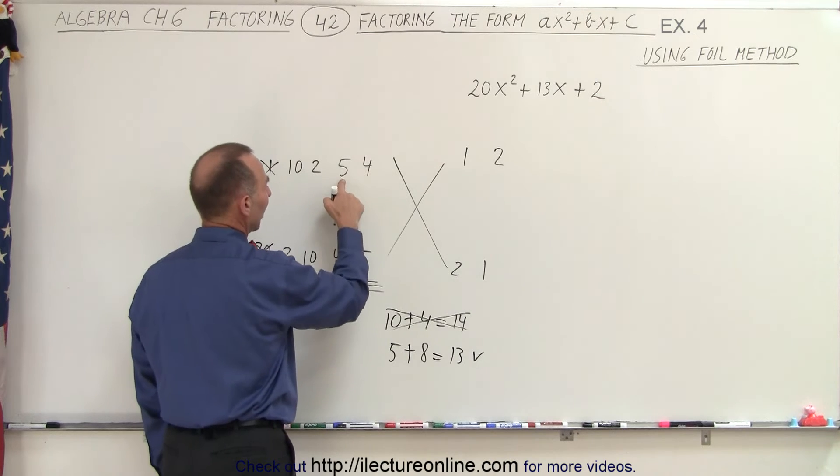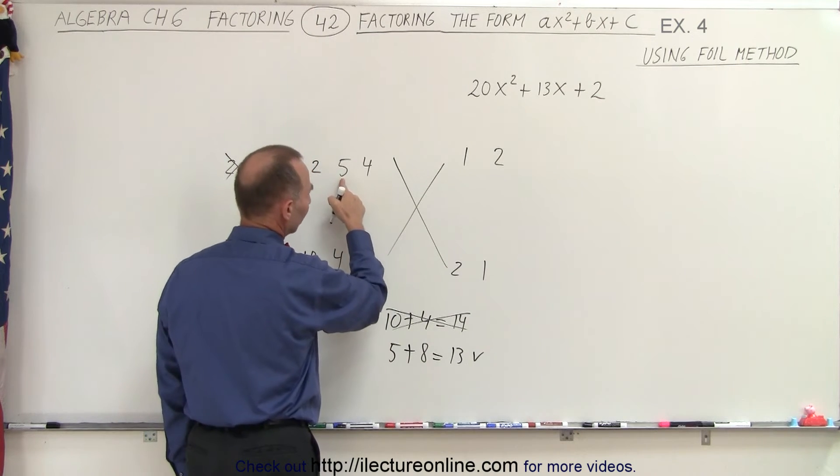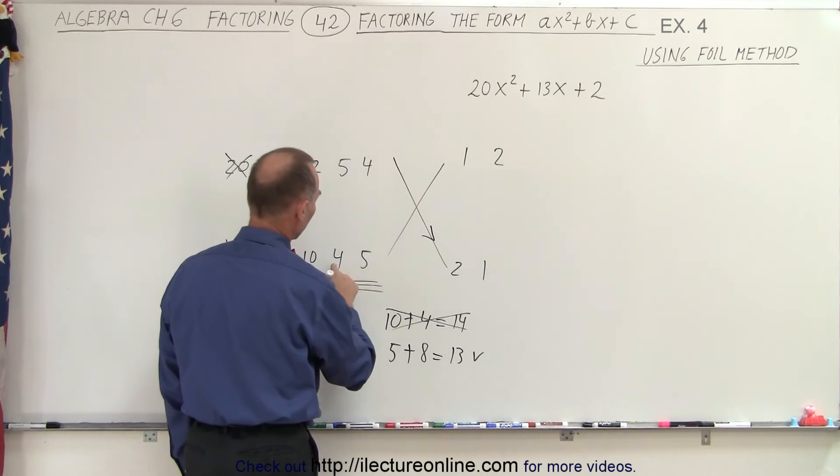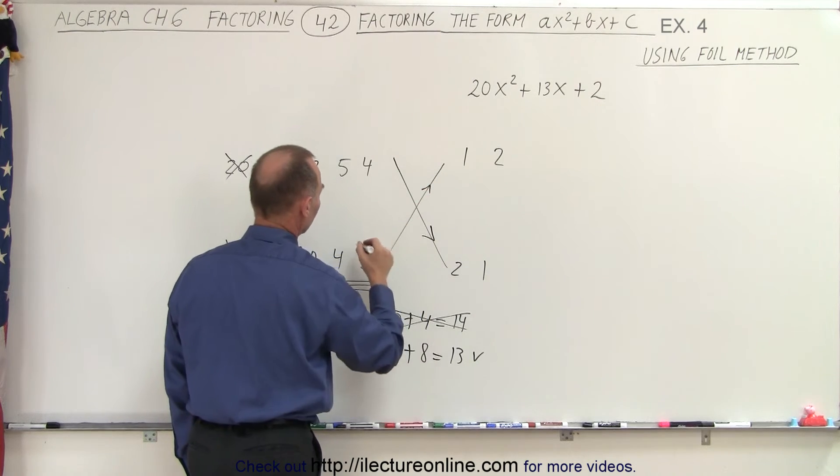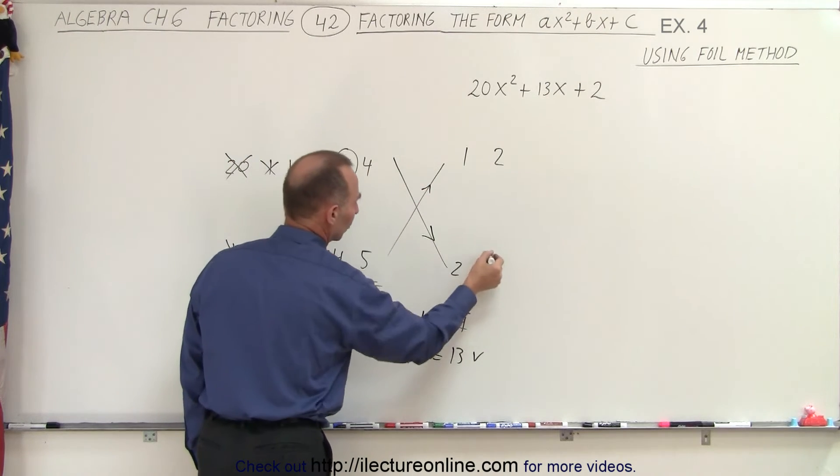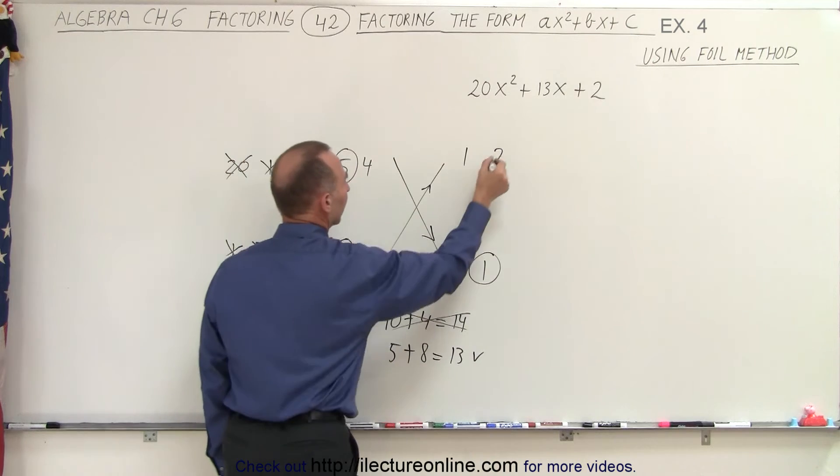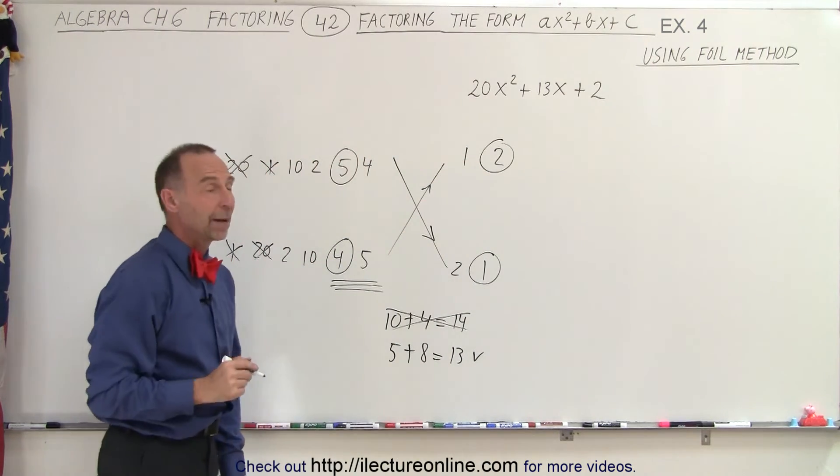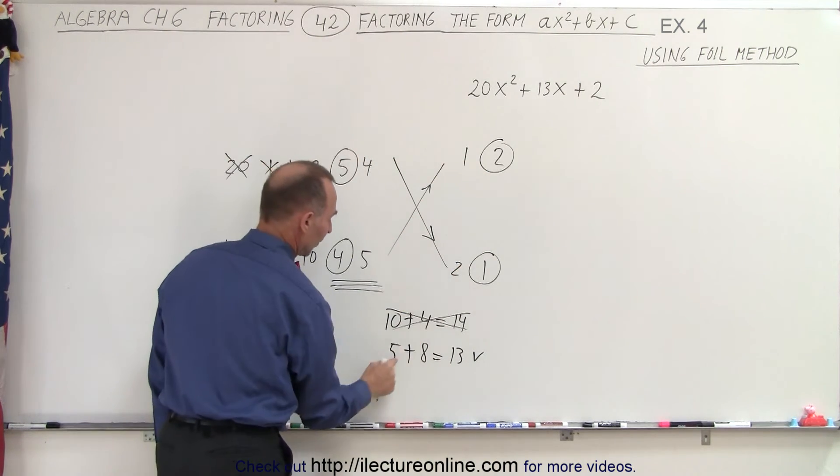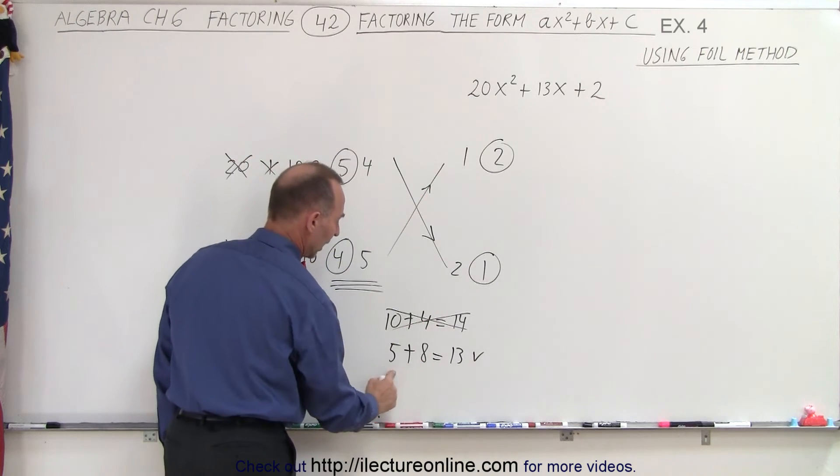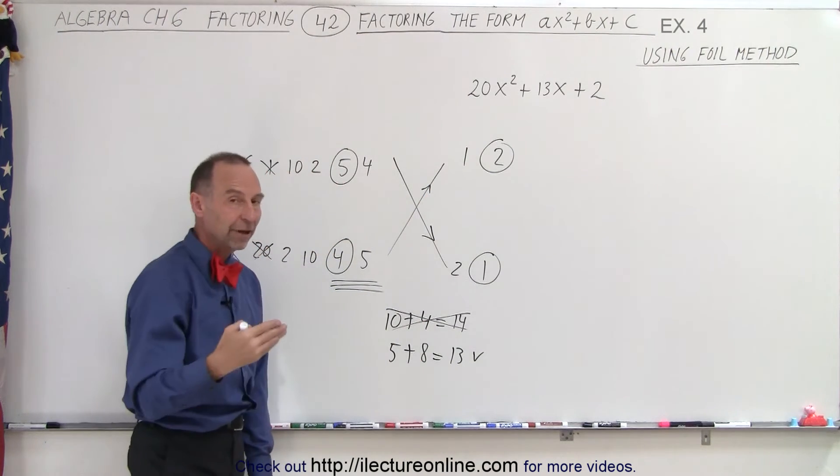So what I did was I went 5 times 1, and notice I multiply 5 times 1 so I go in this direction. I multiply 4 times 2, I go in this direction. So 5 multiplied times 1 and 4 multiplied times 2 gave me the correct combination. 5 times 1 is 5, 4 times 2 is 8. Add them together I get 13. I found the right set.